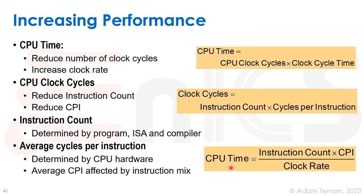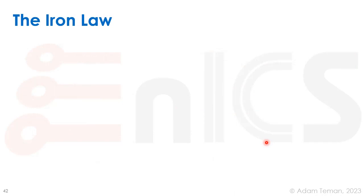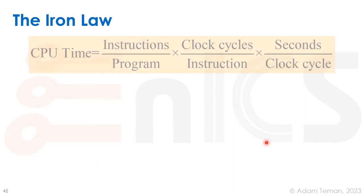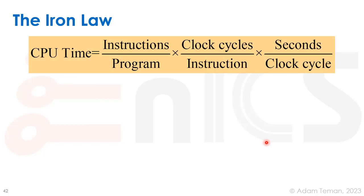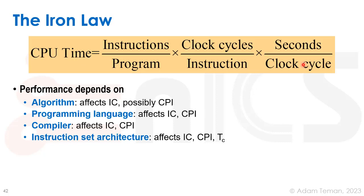In total, CPU time can be expressed as instruction count times CPI divided by clock rate. This leads us to the basic Iron Law: CPU time equals the number of instructions to run a program (instruction count) times the number of clock cycles per instruction (CPI) times the number of seconds per clock cycle. So we have instructions per program times clock cycles per instruction times seconds per clock cycle — that is the Iron Law of performance.